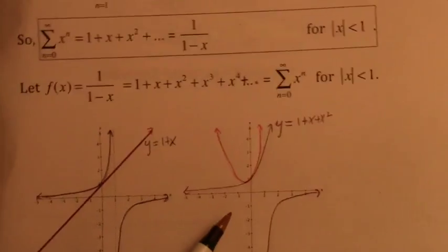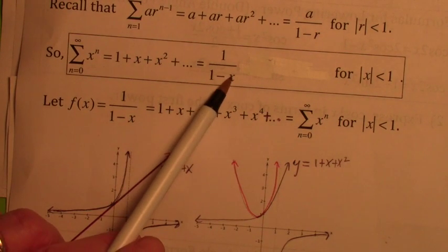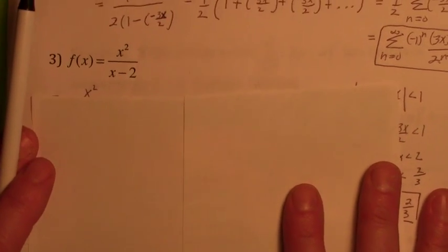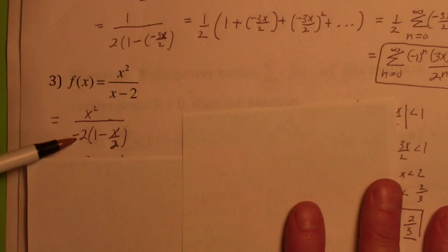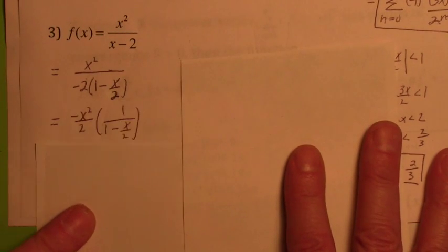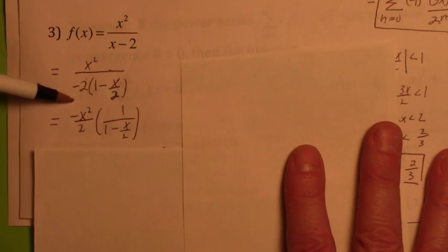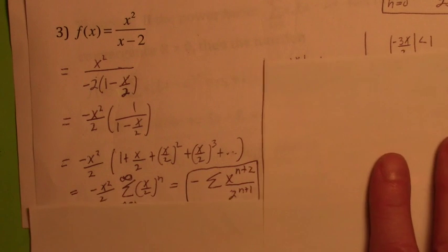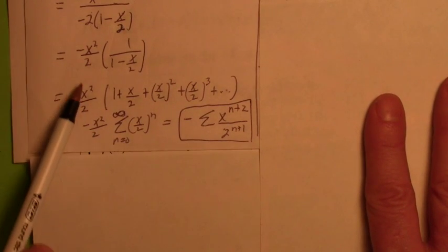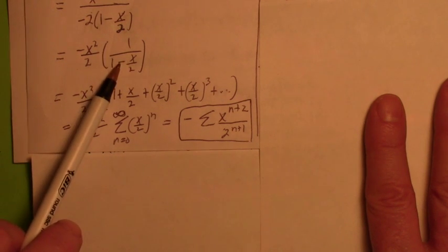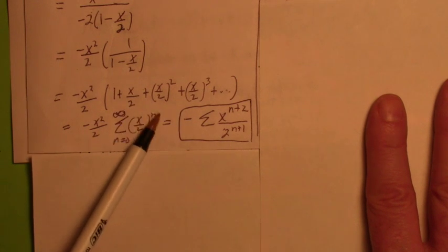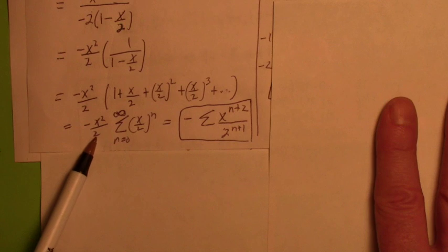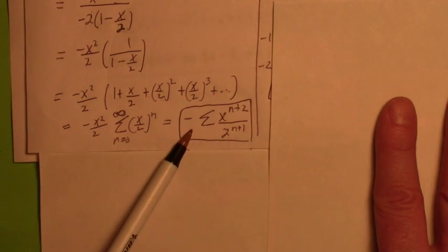This was x minus 2, so the first thing you would do is factor out a negative 2 from the bottom. Then factor the x squared out and the negative 2 out and write it like this. This is a geometric power series — all we have to do is replace x with x over 2. The negative x squared over 2 factor is out, and this becomes the geometric power series by replacing x with x over 2. At the end, if you move the x squared in, that becomes x to the n plus 2. And instead of 2 to the n it becomes 2 to the n plus 1.